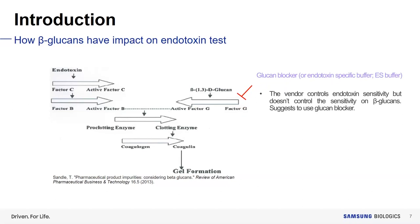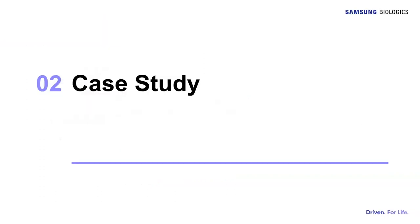Vendors of LAL solutions suggest using a glucan blocker or endotoxin-specific buffer — ES buffer — to block beta-glucan interference. Many drug manufacturers, including Samsung Biologics, use a glucan blocker if required. At Samsung Biologics, we have a qualification process for endotoxin tests at each sampling point. During early manufacturing and qualification, we conduct studies to decide whether a glucan blocker is required. After qualification, we use or don't use the glucan blocker based on those results unless a process change may impact beta-glucan levels.